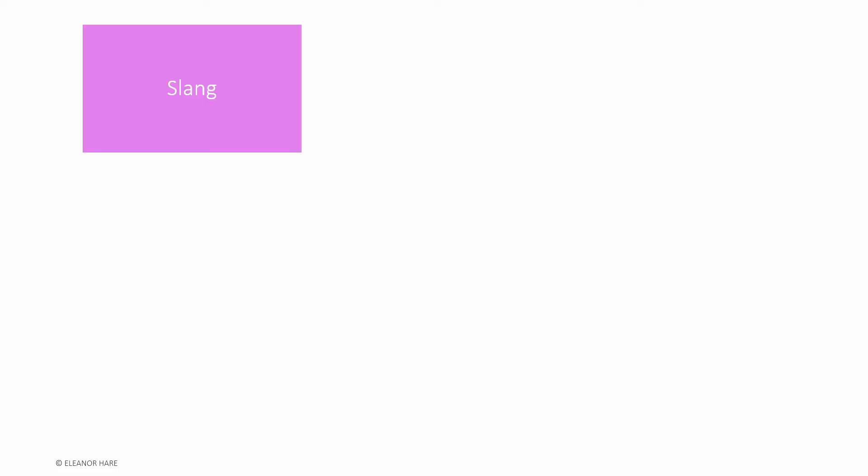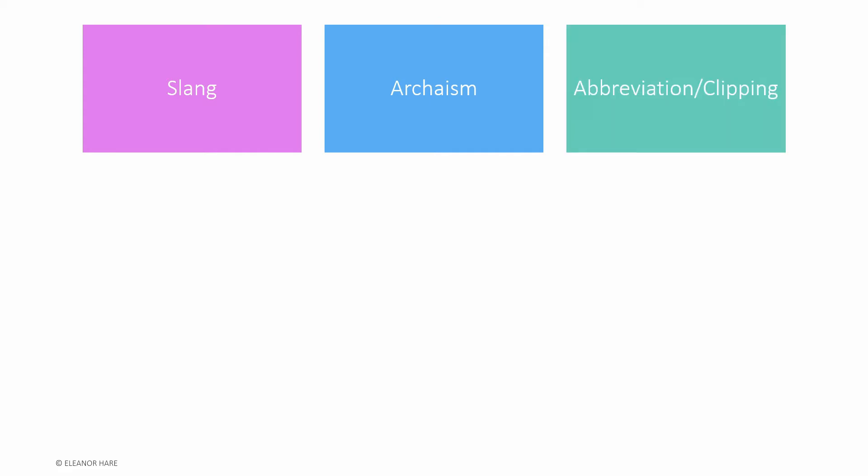Let's look at some key terms. Firstly, slang — this is vernacular, colloquialisms, informal language. Archaisms, which are archaic, old-fashioned language. Abbreviations and clippings, which are abbreviated or shortened words. For example, 'fridge' is a shortened or abbreviated form of 'refrigerator'.